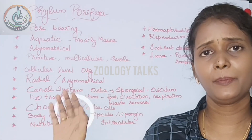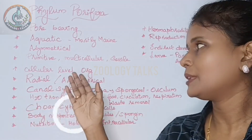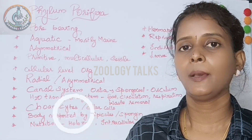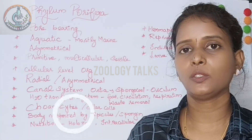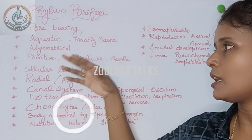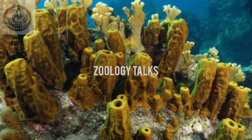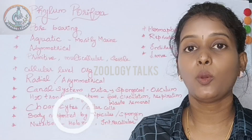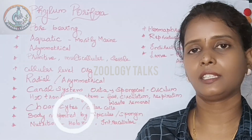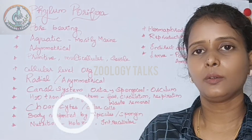Porifera are primitive multicellular organisms. Unicellular organisms are protozoa — for example, Amoeba and Euglena. Porifera, by contrast, are a multicellular group. They are also sessile, meaning they are attached to a substrate. Next is the Level of Organization.